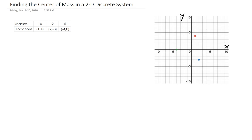In this case, if you look to the right here in this figure, we have three mass points. The first one has a mass of 10 located at (1, 4), mass 2 is at (2, -3), and mass 3 is at (-4, 0). I'm just going to quickly label those: mass 1, mass 2, and mass 3.